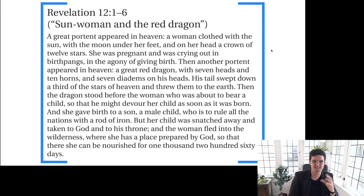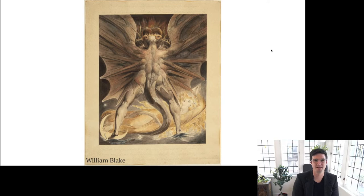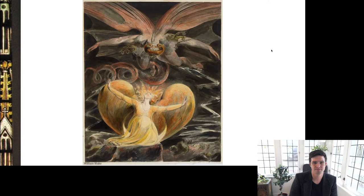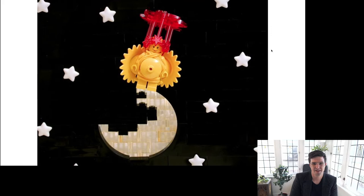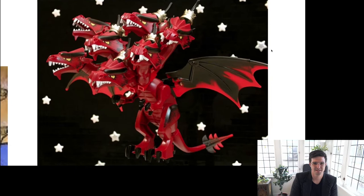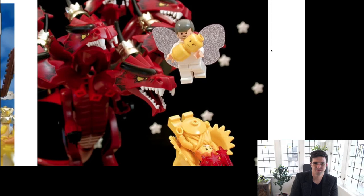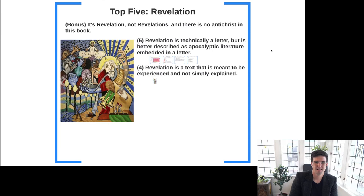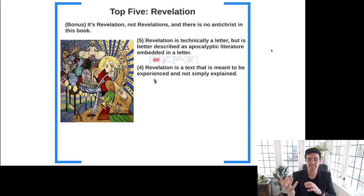Our last one is the sun woman and the red dragon from Revelation chapter 12. Go ahead and pause and read these verses from Revelation, and we'll take a look at just a handful of artistic renditions. William Blake is of course one of the most famous artists who depicts scenes from Revelation — the beast sort of hovering over the woman here. And then from a different angle, and then again our Brick Bible version. All of that to say: the imagery of Revelation when we experience or imagine it or see it artistically depicted really does something different than if we just try to explain all the minute details of the text.